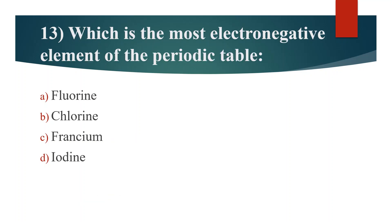Thirteenth question. Which is the most electronegative element of the periodic table? Option A: Fluorine. Option B: Chlorine. Option C: Francium. Option D: Iodine. Answer is Option A: Fluorine.